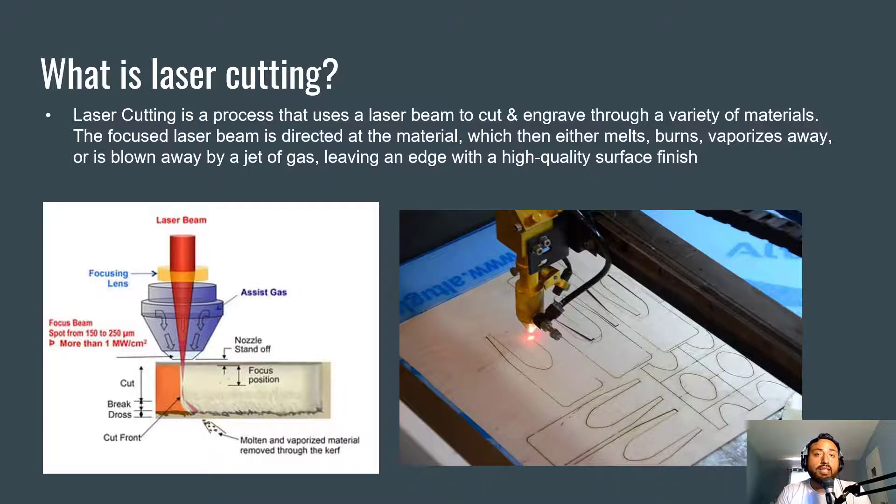Some examples of different materials that laser cutters can use: we've got wood, acrylic, cork, denim, foam, paper, etc. And of course, it all depends on the type of laser cutter that you have.